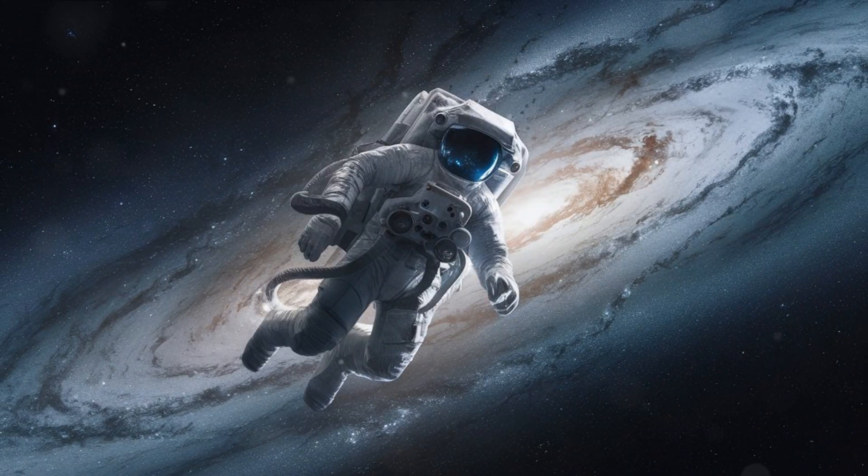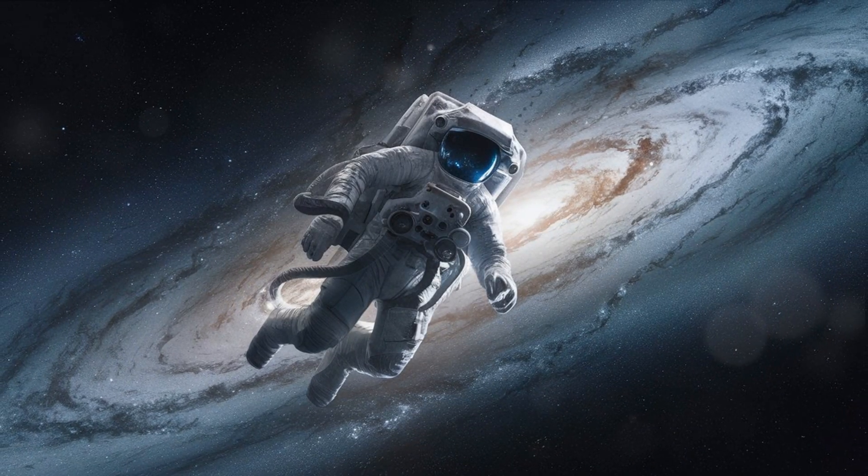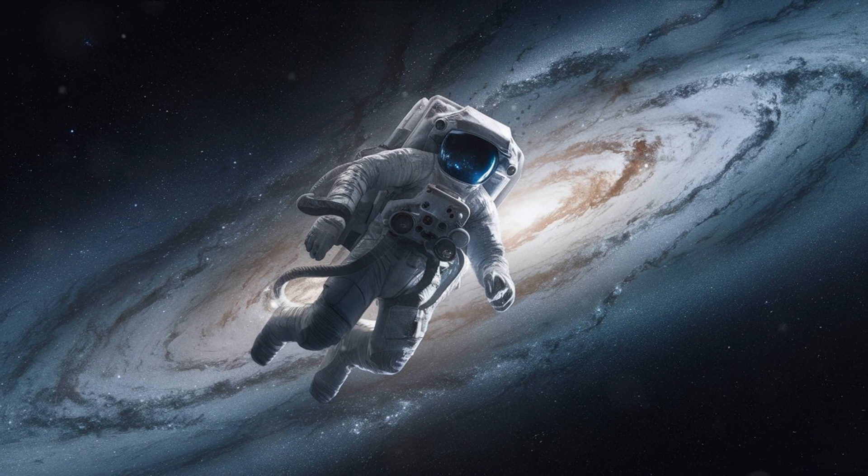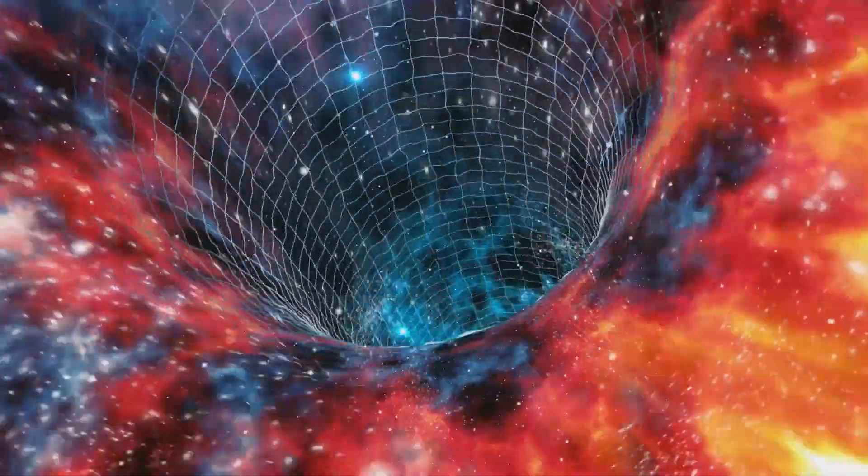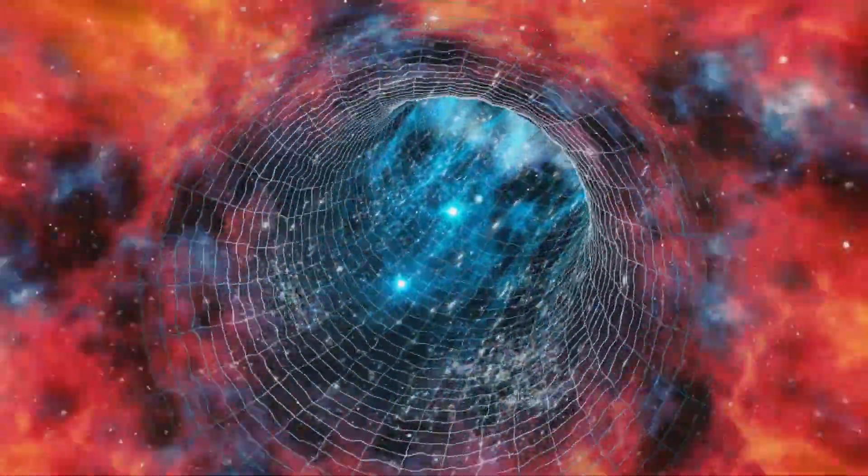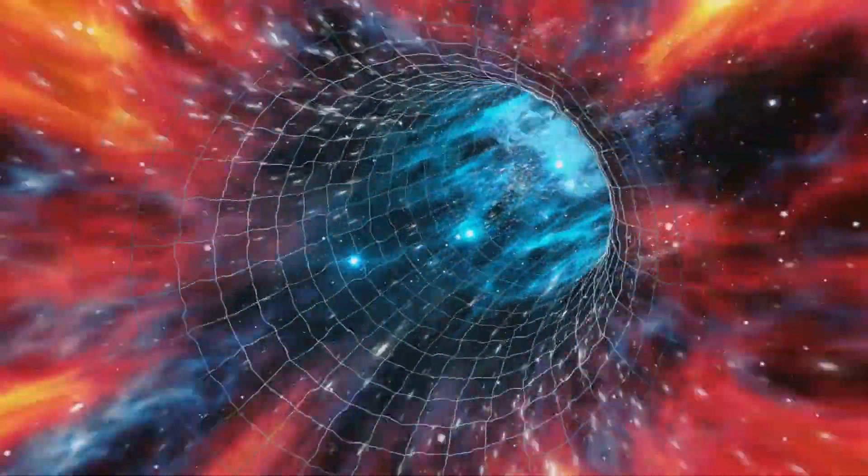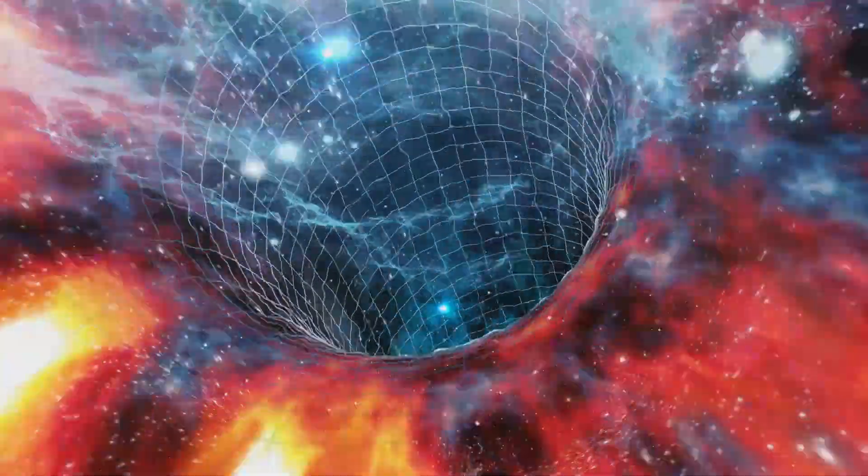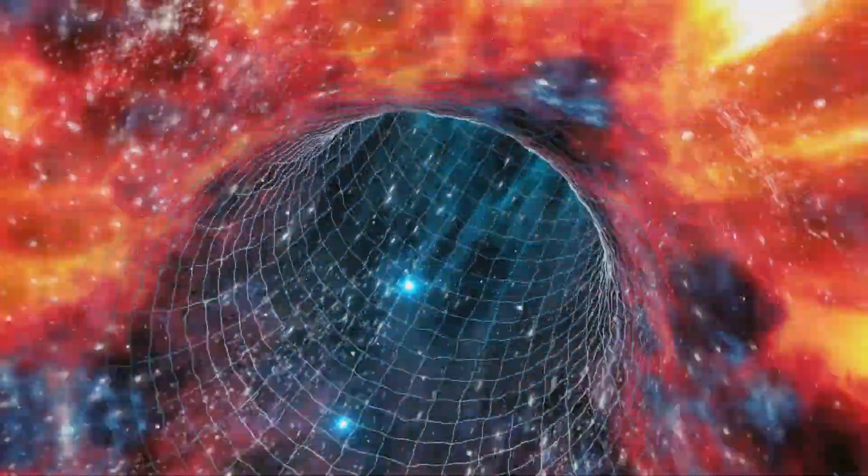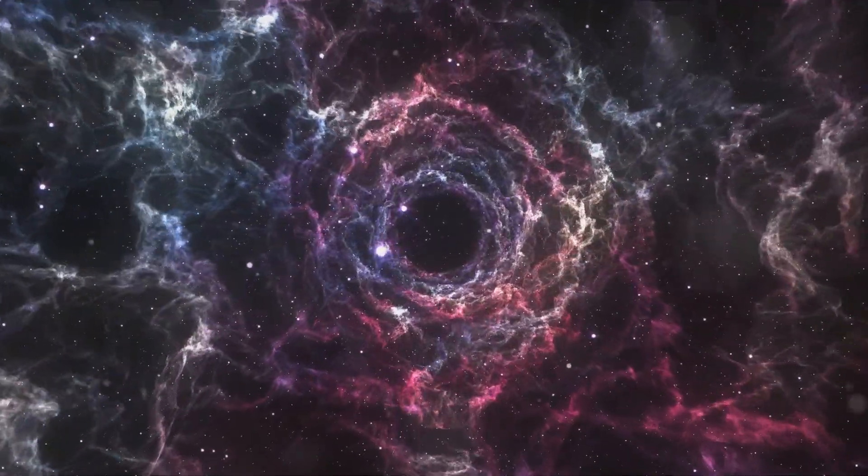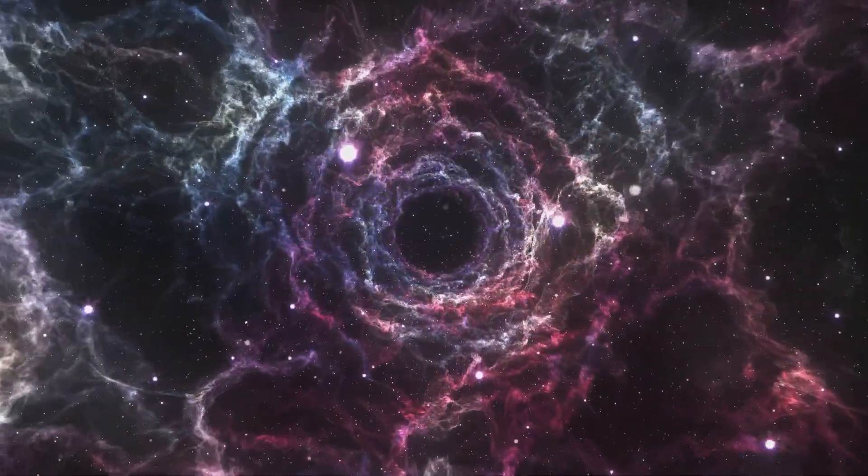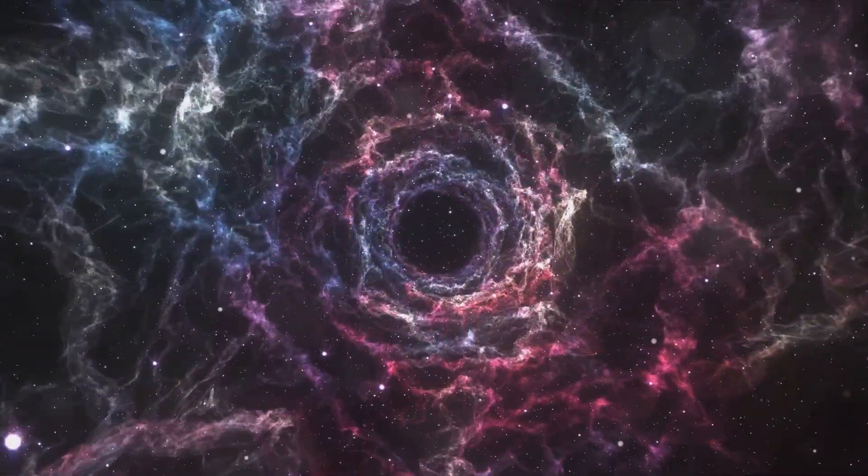Now, if we could manipulate this space-time fabric we could theoretically fold it over on itself to create a shortcut, a cosmic gateway. However, it's not as simple as it sounds. To create a cosmic gateway, we would need something known as exotic matter. This is a type of matter that, believe it or not, has negative energy density. It's this exotic matter that could potentially keep a cosmic gateway open and prevent it from collapsing under its own gravitational pull.